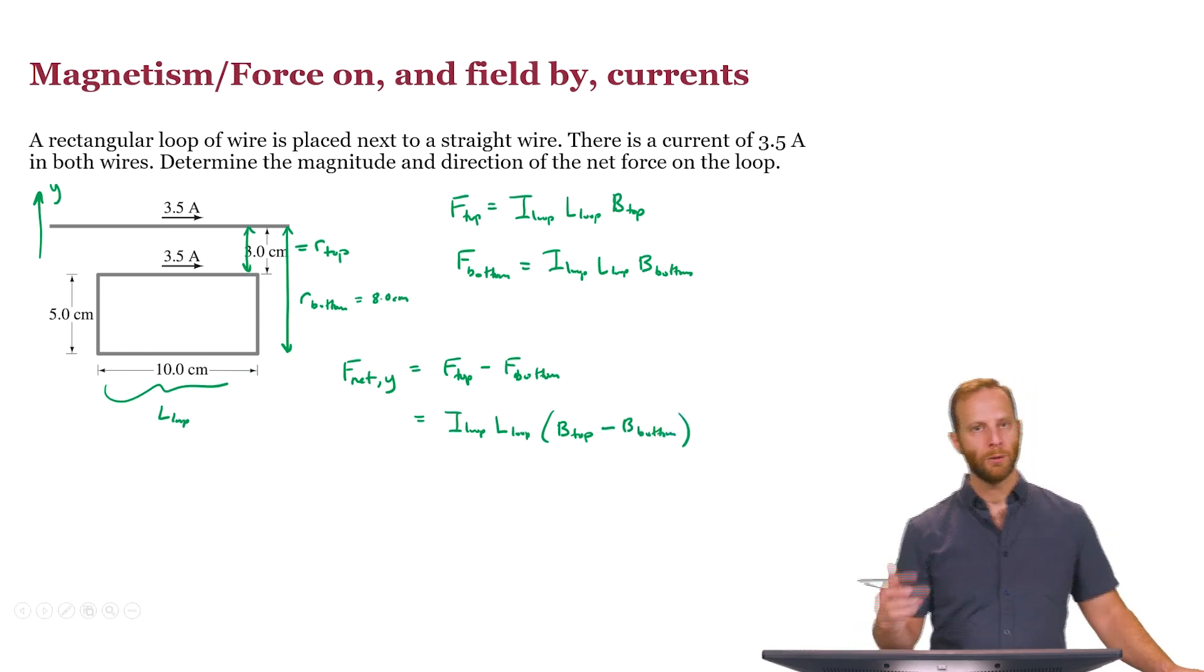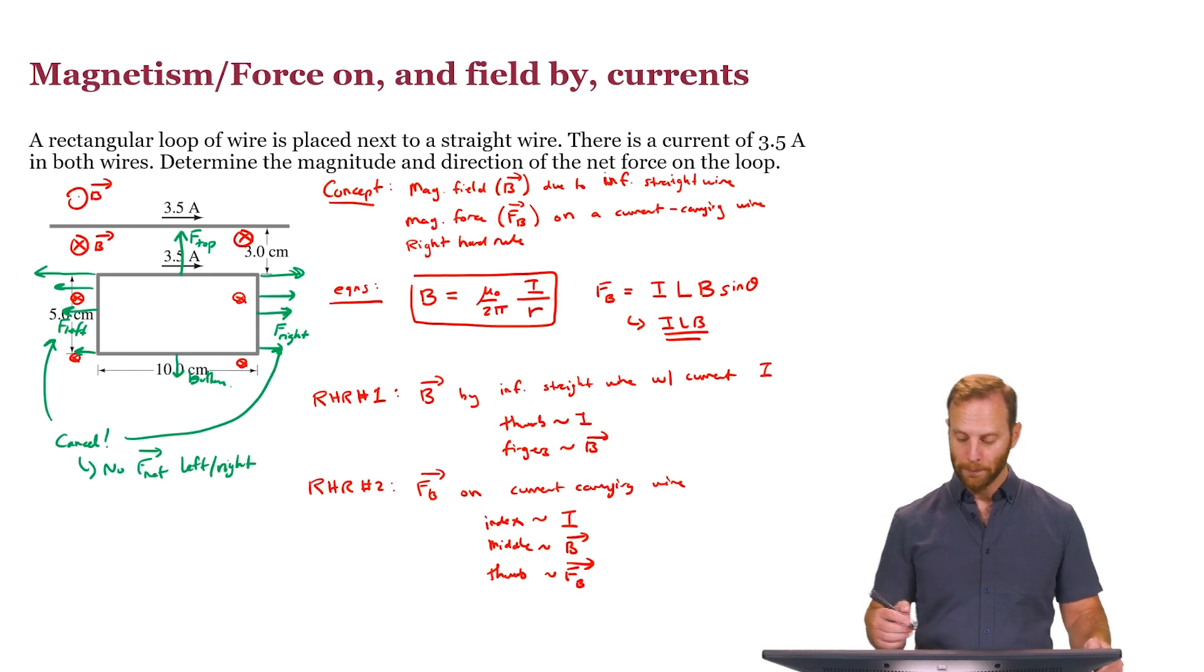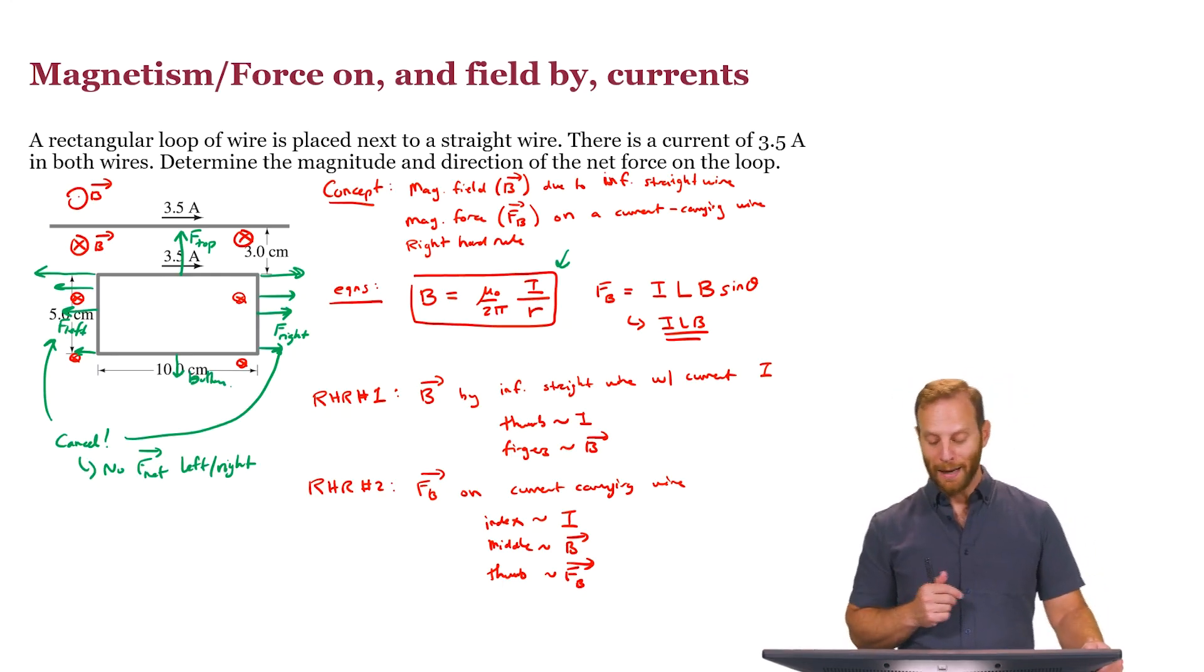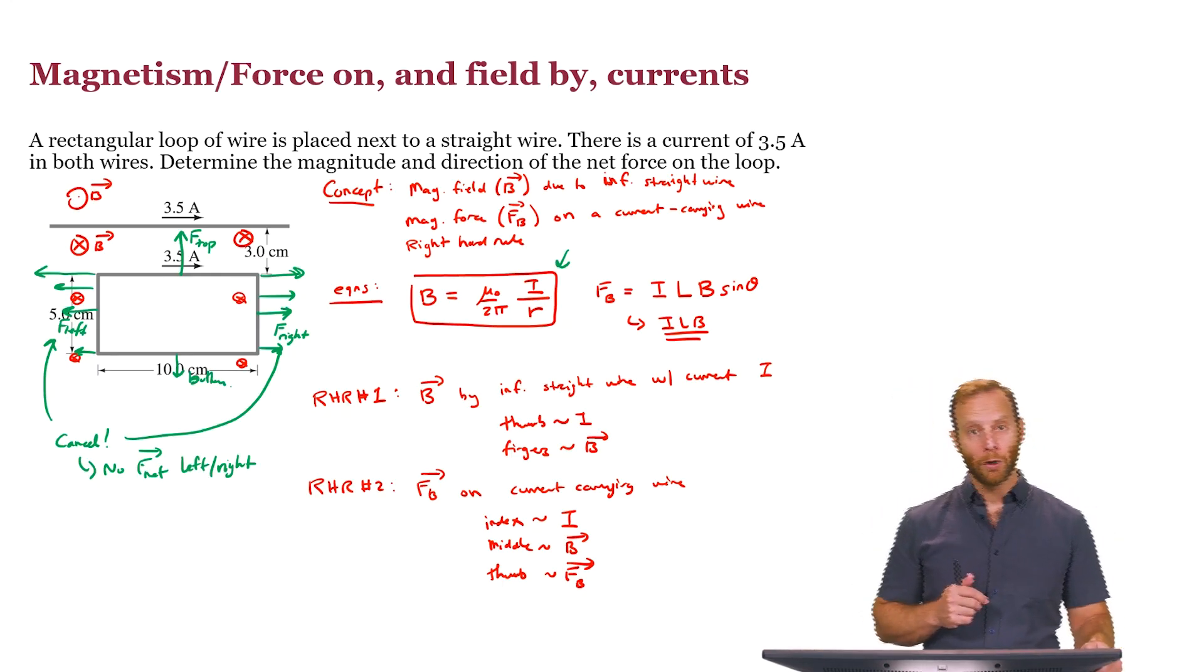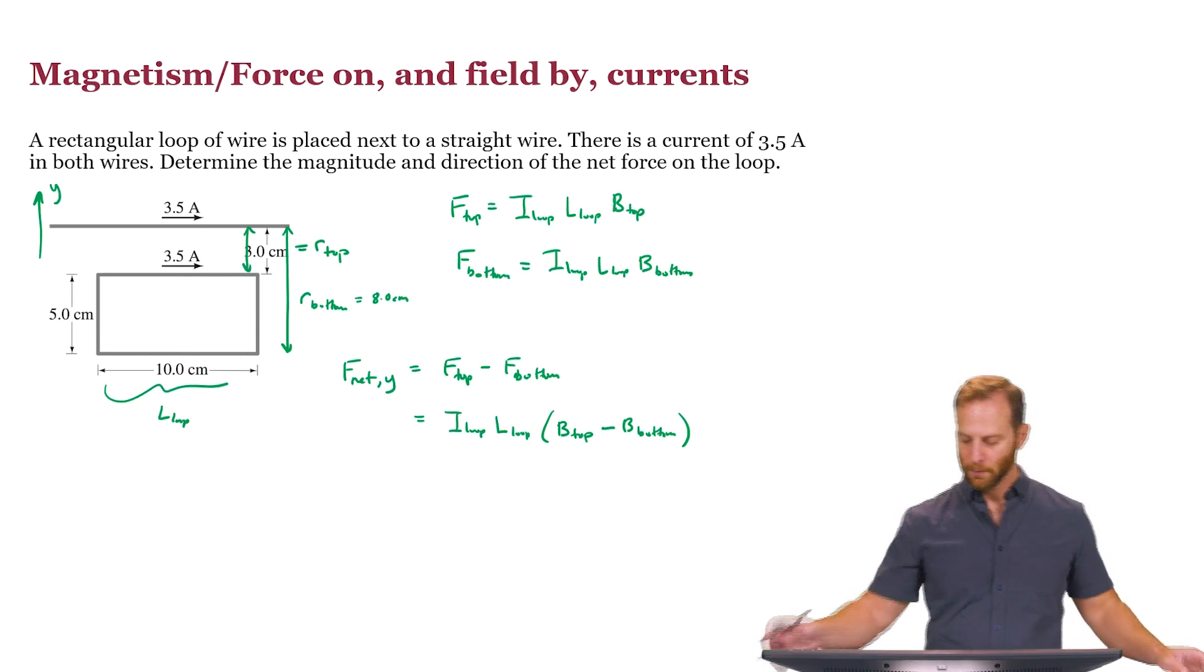We're getting closer to the end. What we need to remember is what the formula is for the magnetic field strength given an infinitely long wire. And it's this formula here, mu-naught, two-pi, I, and R. All of those things are the same for both the top and the bottom, except for the distance away. Let's just make that explicit.